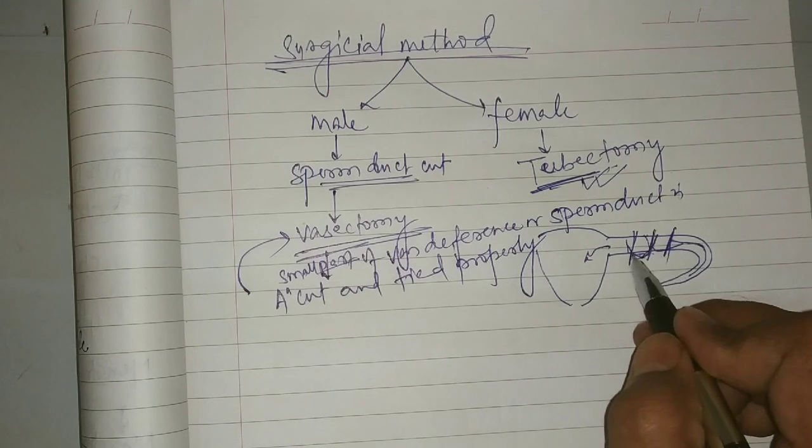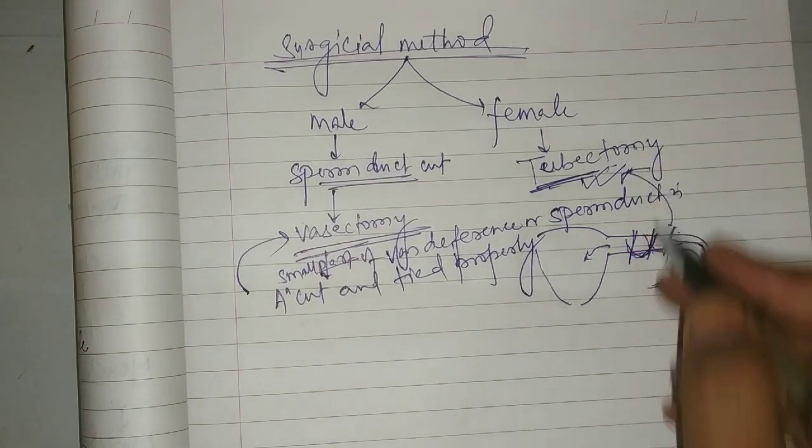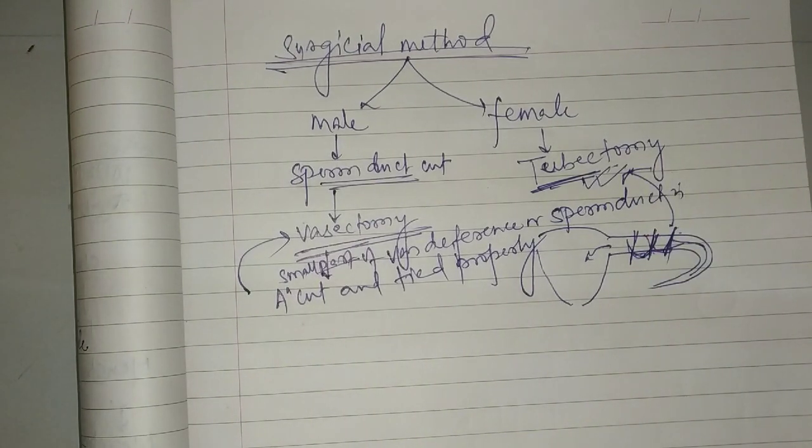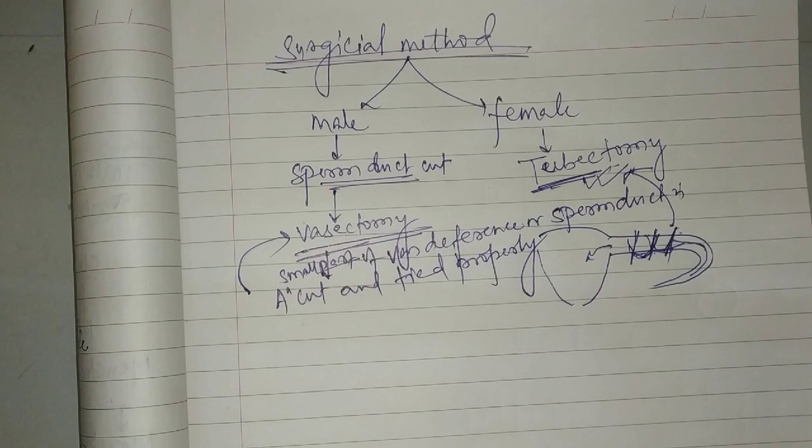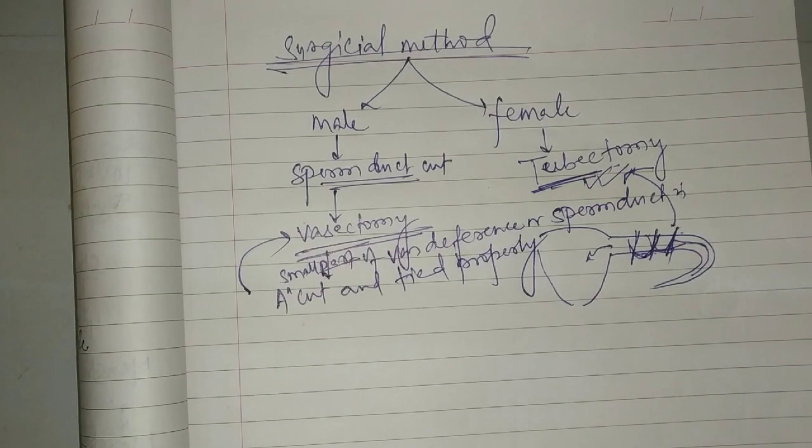When a small cut is given in the fallopian tube and both ends are tied properly, that method will be called tubectomy. This is the most effective method in which we can stop pregnancy.